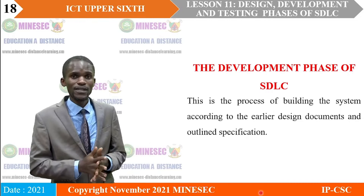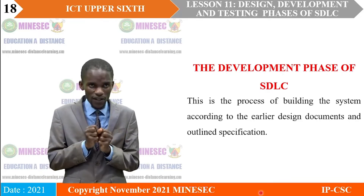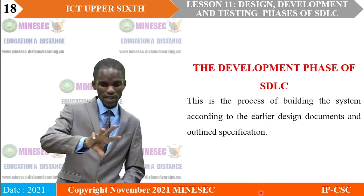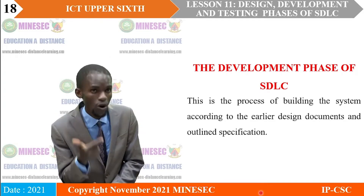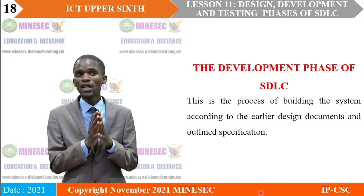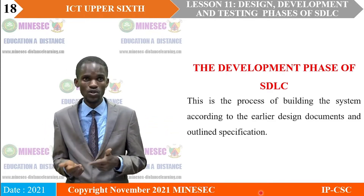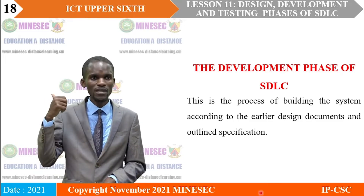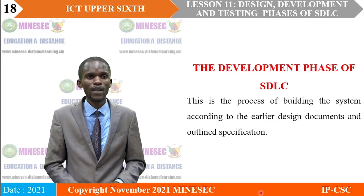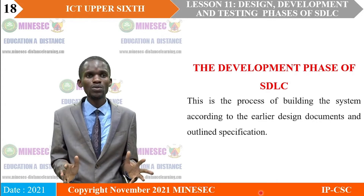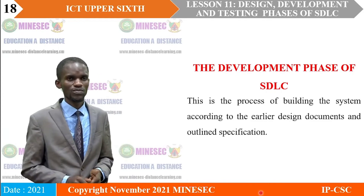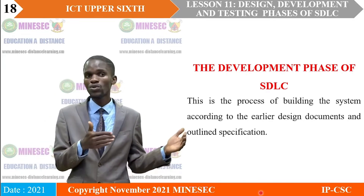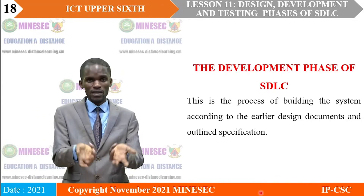After the design phase comes the development phase of the system development life cycle. The design phase puts in place everything required for development or construction to take place — in some documentation, development is synonymous with construction. Here, the process of building the system according to the earlier design and documents is put in place. The system is constructed according to the outlined specifications from the requirement analysis report and the design.